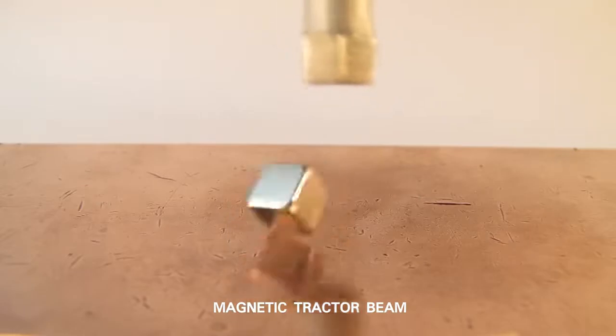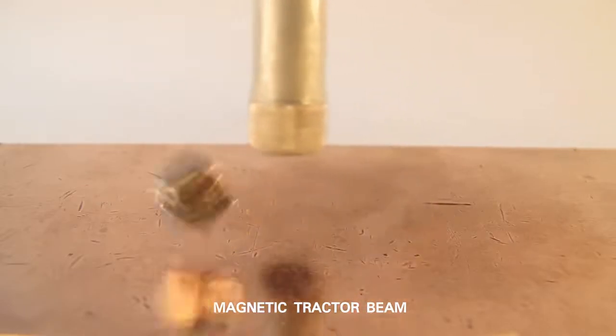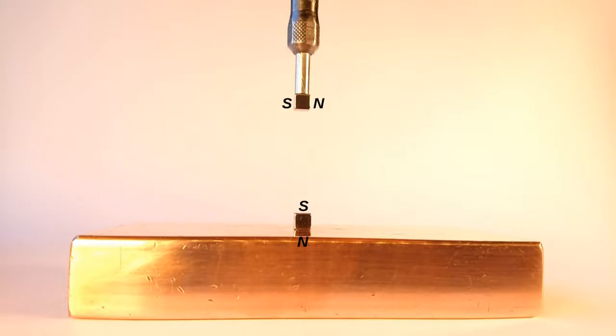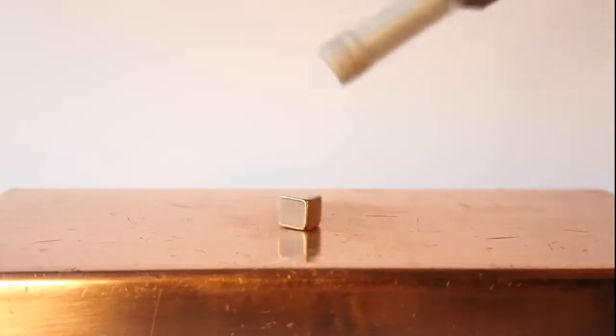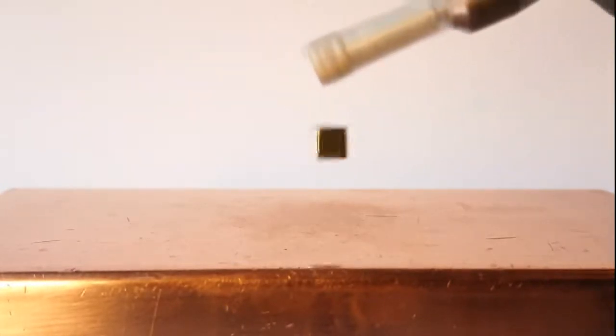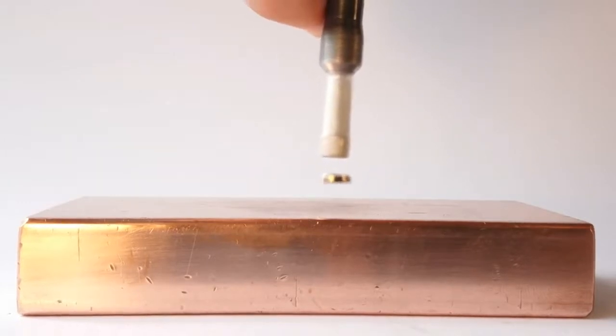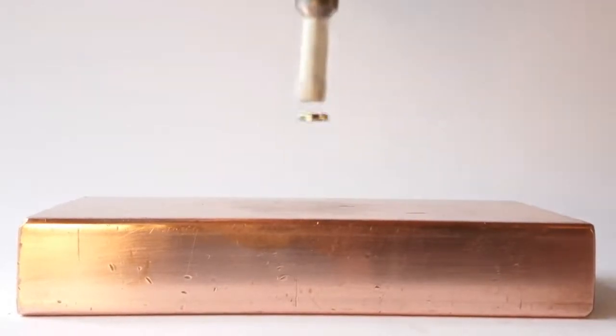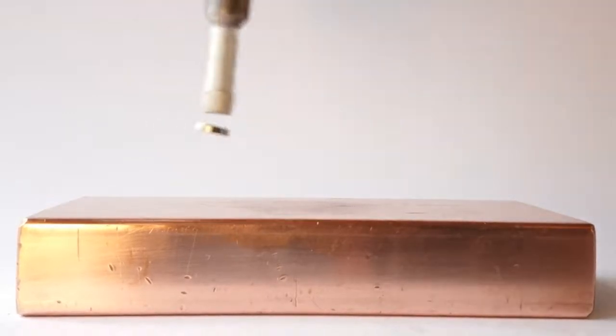When a magnet is spun at a certain RPM rate, it is possible to levitate another magnet under it. The spinning magnet attached to a power tool locks the levitating magnet at a distance of about 5 to 10 millimeters. The levitation gap can be adjusted by changing the rotation speed. Faster RPM means a smaller levitation gap. The tractor beam effect is also much tighter with higher RPM. Copper isn't necessary for the effect, but it helps to stabilize the magnet.